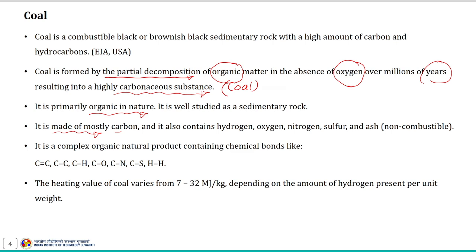Ash is basically a non-combustible matter in the coal composition. Coal is a complex organic natural product containing chemical bonds like C=C, C–C, C–H, and C–O. The heating value of coal varies from 7 to 32 megajoules per kg, and mainly depends on the amount of hydrogen present per unit weight. This is also one of the parameters used to rank coal.